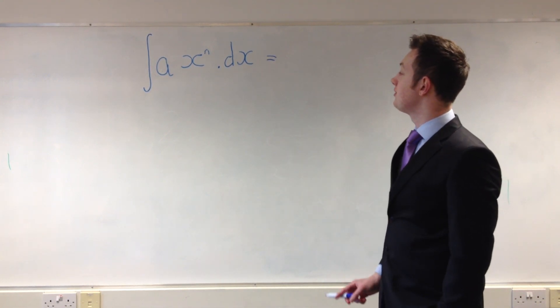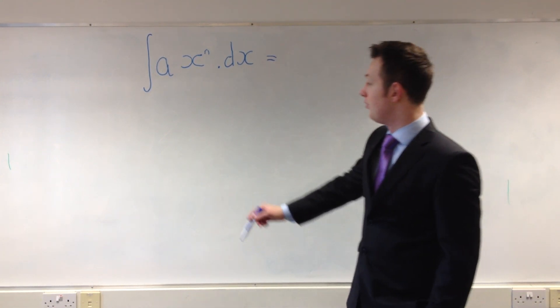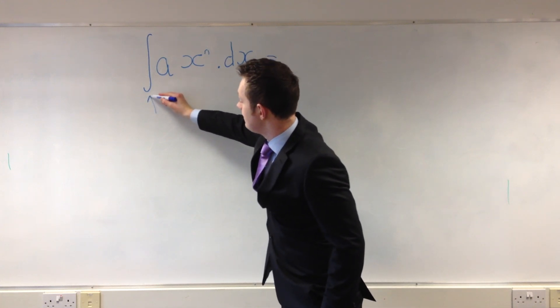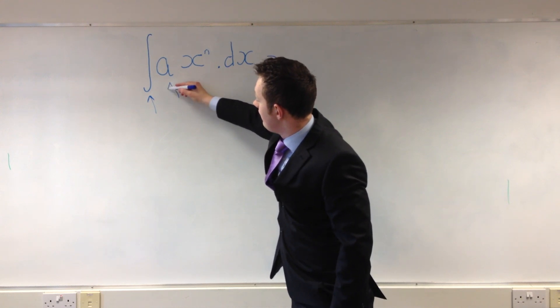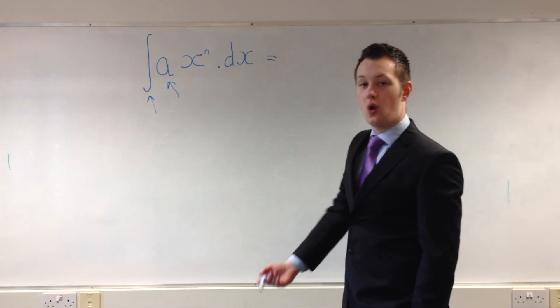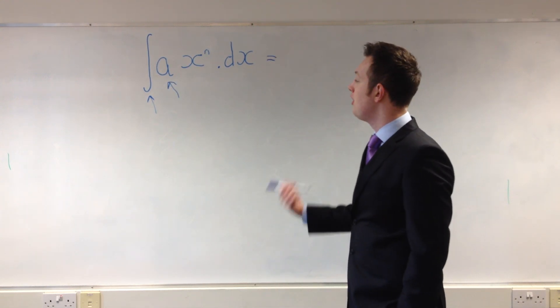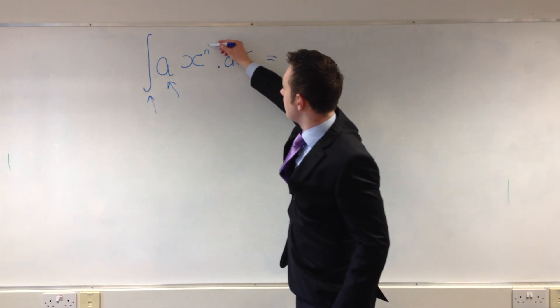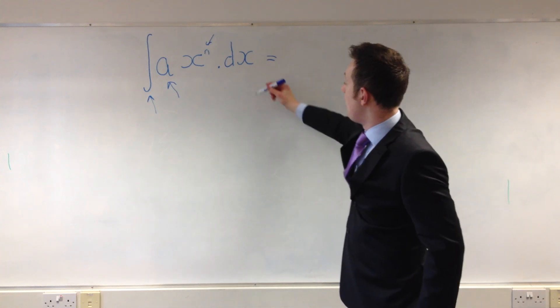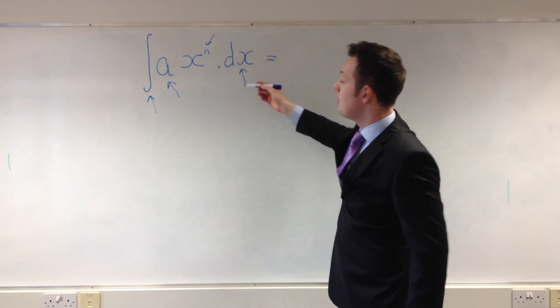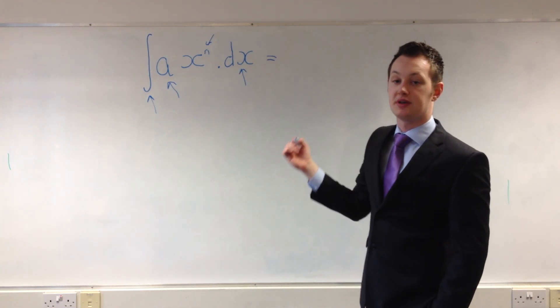This is the way integration normally takes form. This is the integration sign. It just shows us that we are going to integrate. It's just the coefficient of x, it can be any constant or a number. The n is obviously the power of x and dot dx just shows us that we're going to integrate with respect to x.